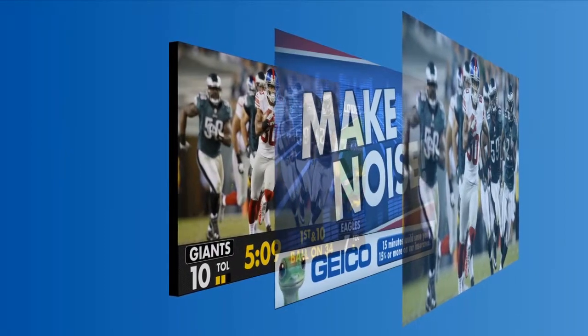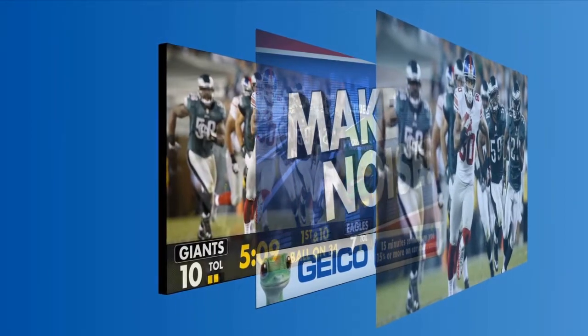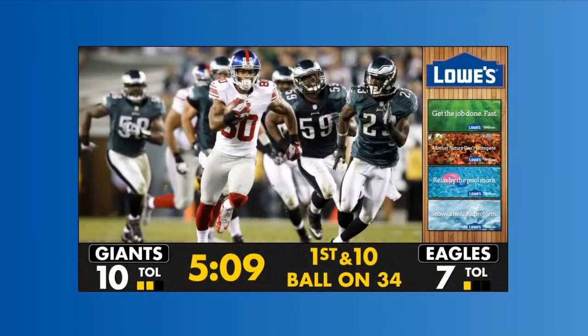Zoning, also known as windowing, is an effective way to maximize use of space on a display by dividing the whole sign into multiple sections, each capable of showing content independently.